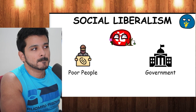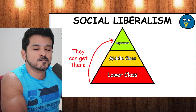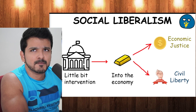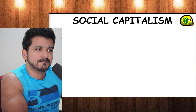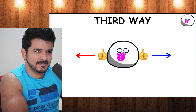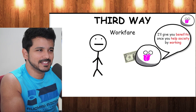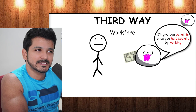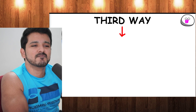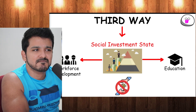Social liberalism focuses on making social mobility easier and providing more equality of opportunity rather than equality in all domains. It likes a little bit of government intervention in the economy in the name of ensuring economic justice and civil liberty. Social capitalism is a combination of social democracy, social liberalism, and capitalism. The Third Way tries to reconcile right-wing and left-wing politics, combining stances from social democracy and social liberalism. It supports workfare — a governmental plan requiring people to accept public service jobs or participate in job training to obtain benefits — and seeks a compromise between a purely free economic system and a welfare state.